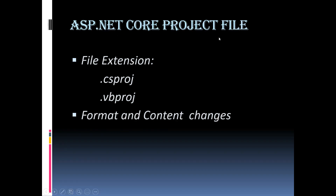The .NET Core project file has a specific file extension. If you worked with previous versions of the ASP.NET Core framework and you are using C# as the programming language, the framework will create .csproj as the extension — 'cs' for C-sharp, 'proj' for project. Similarly, if you are using Visual Basic, it will create the project file with .vbproj as the extension — 'vb' for Visual Basic, 'proj' for project.